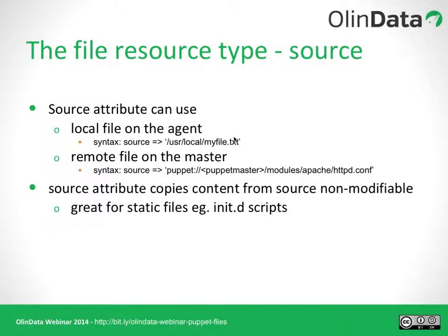The file resource type source attribute supports two different formats broadly. We have a format to point to a local file on the agent and one to point to a remote file on the master. Depending on which option you choose, it opens the file that the source attribute points to and copies the contents into the target file. It's non-modifiable — whatever is in the source file will be copied into the target. That means there's no flexibility for parameters that need to change from server to server, but it's great for scripts and init scripts and files that don't need to be unique per machine.